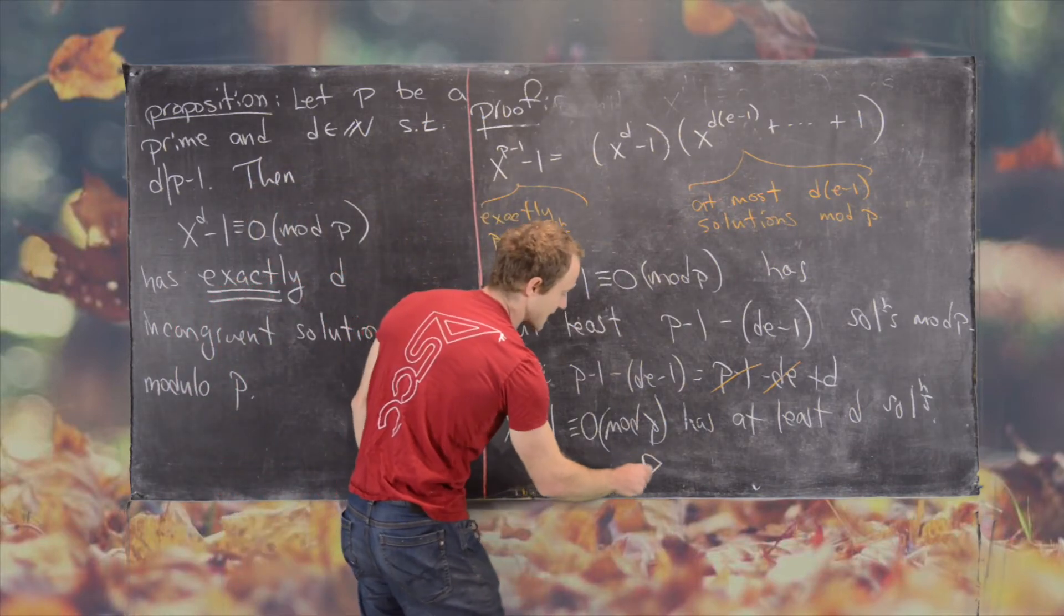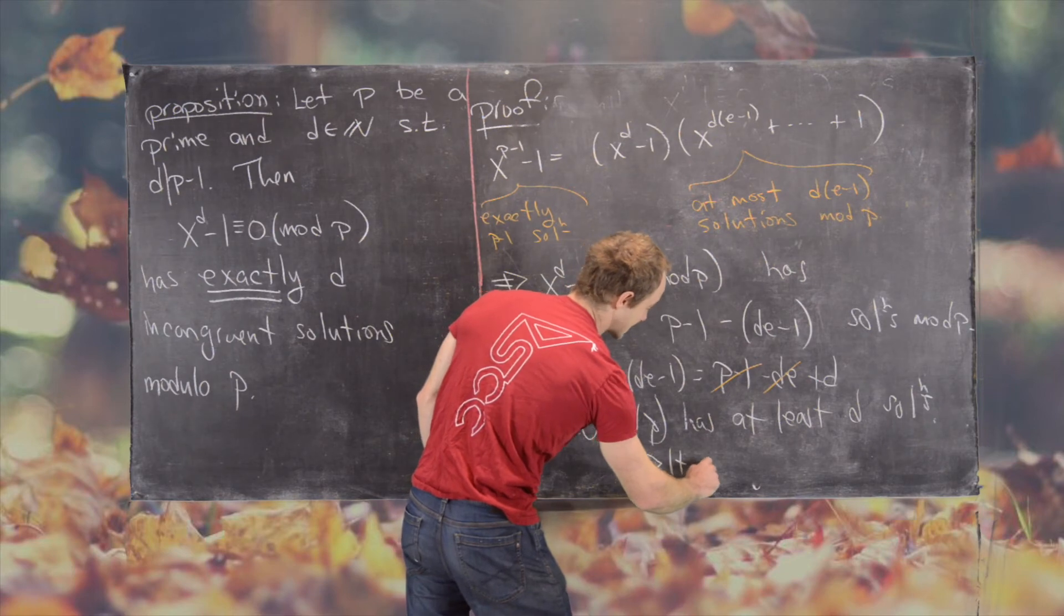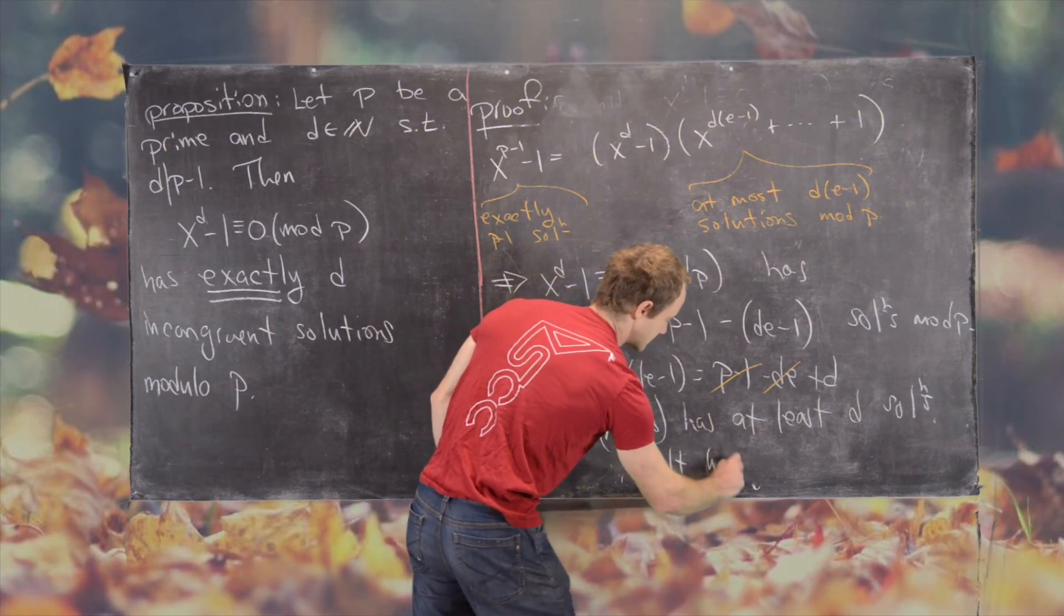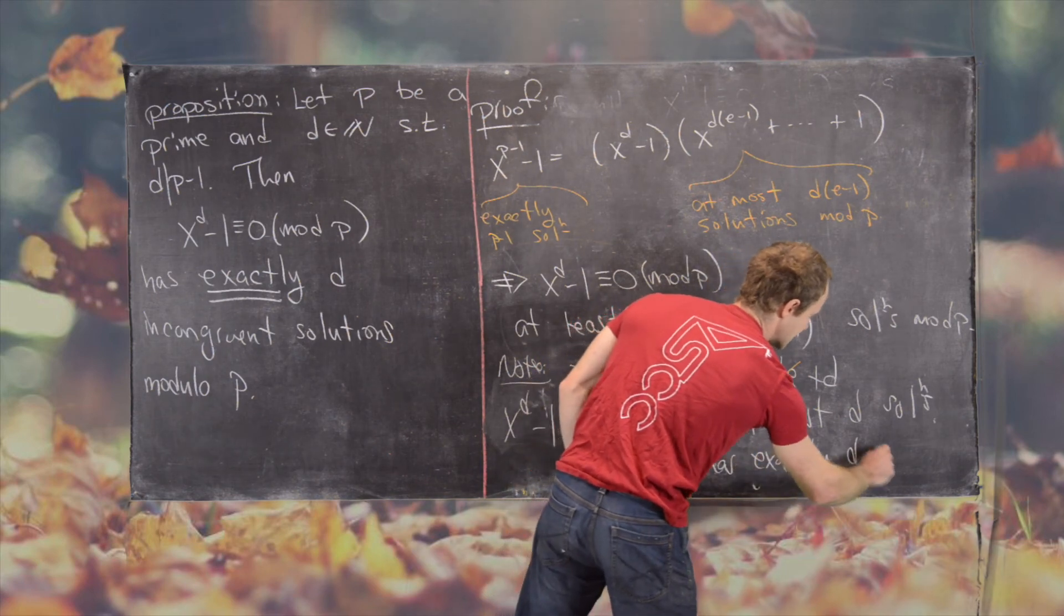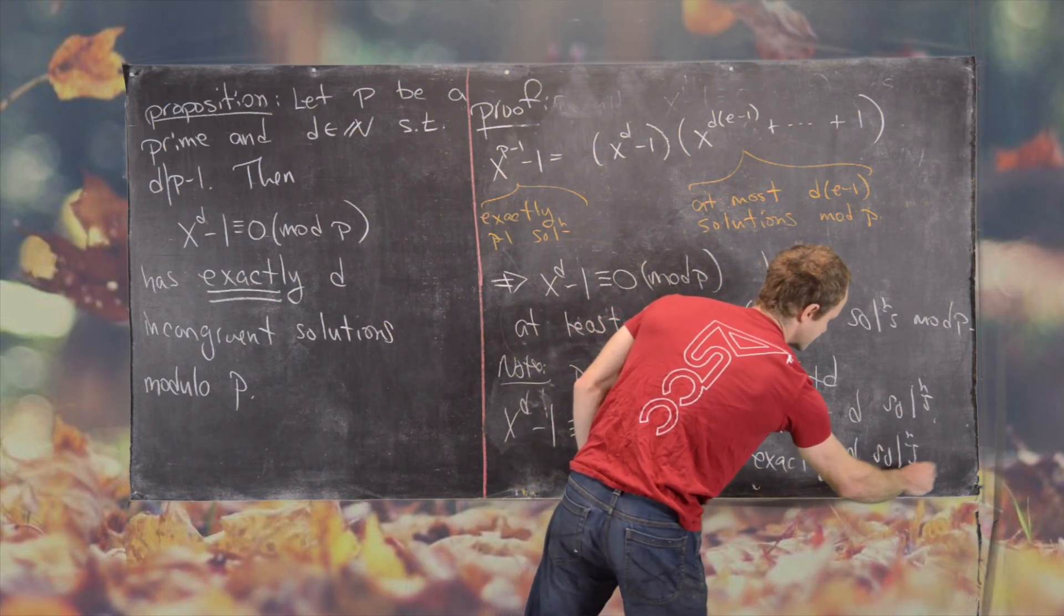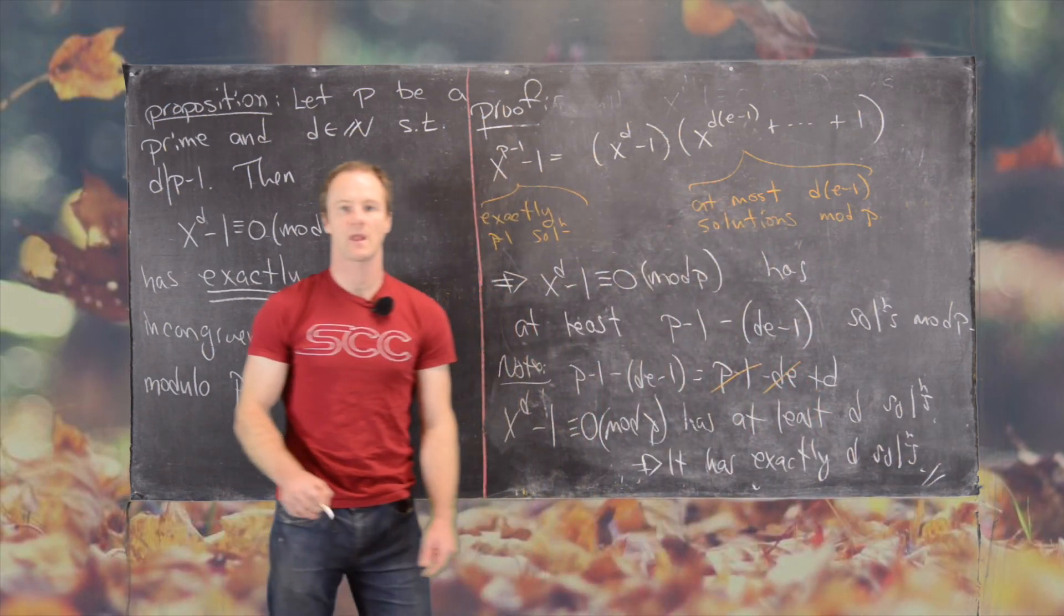So putting that together shows us that it has exactly d incongruent solutions. And that finishes the proof.